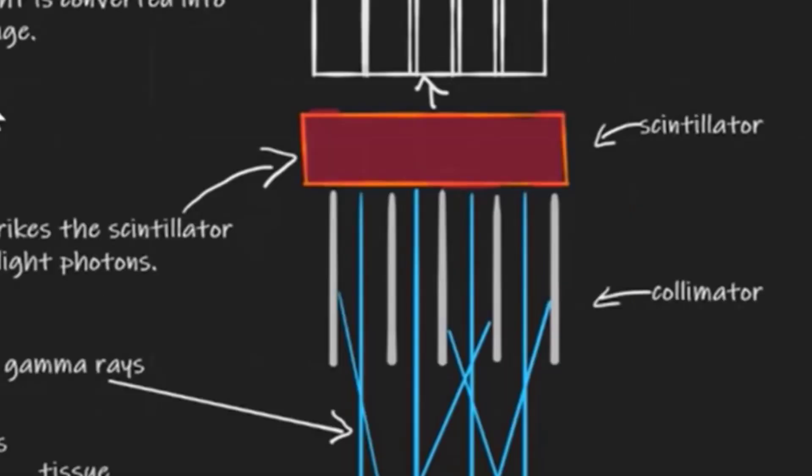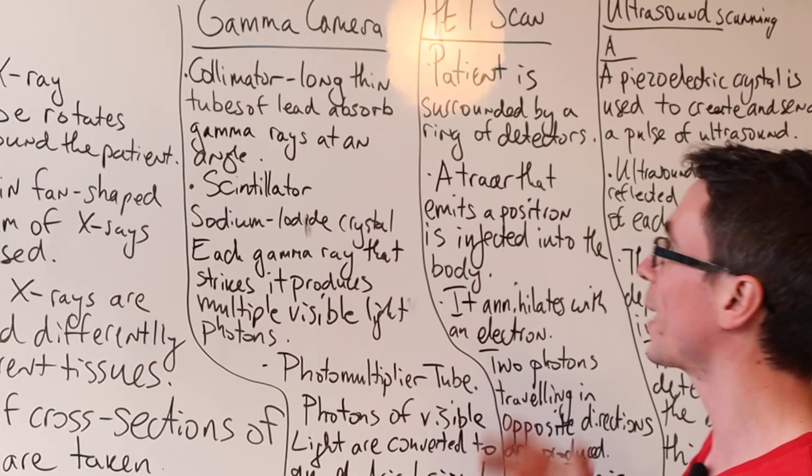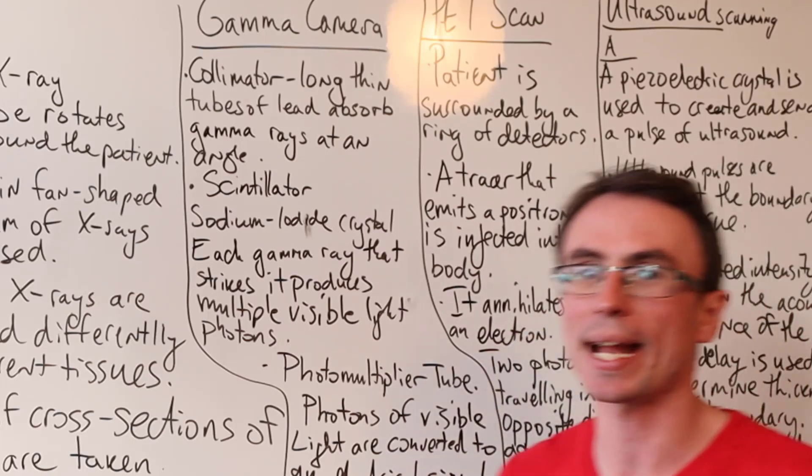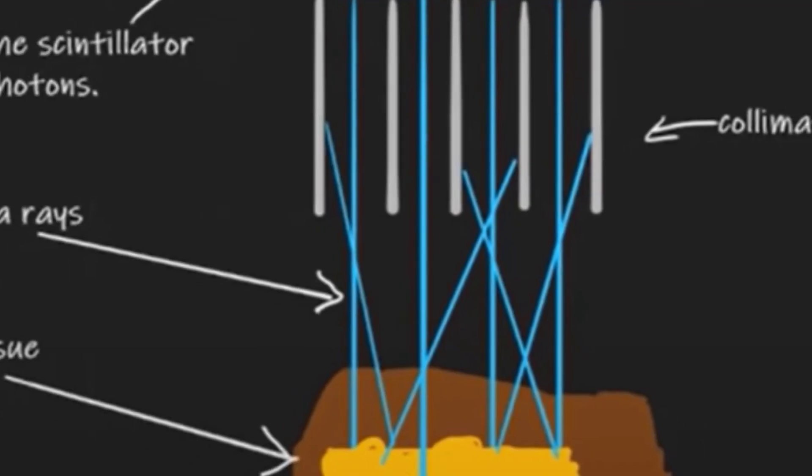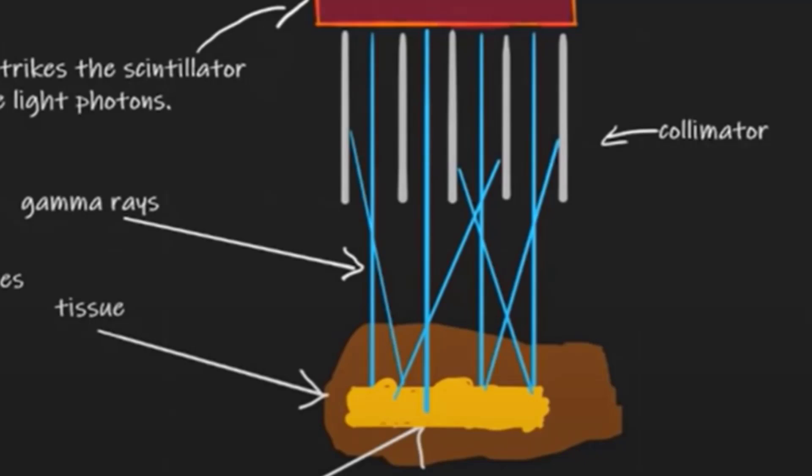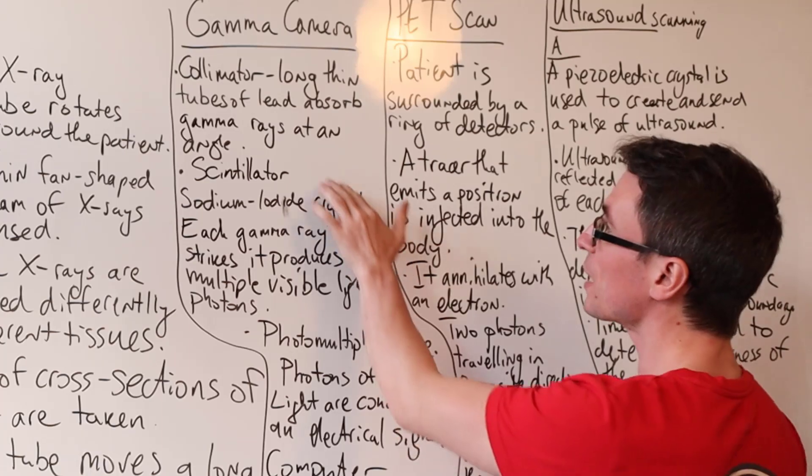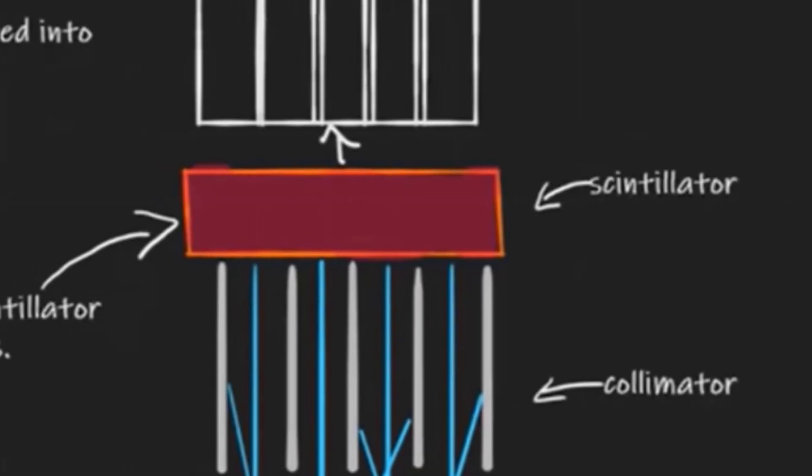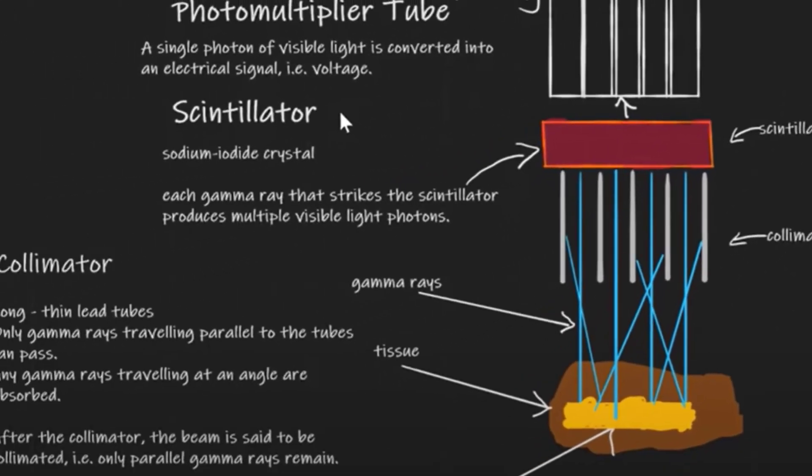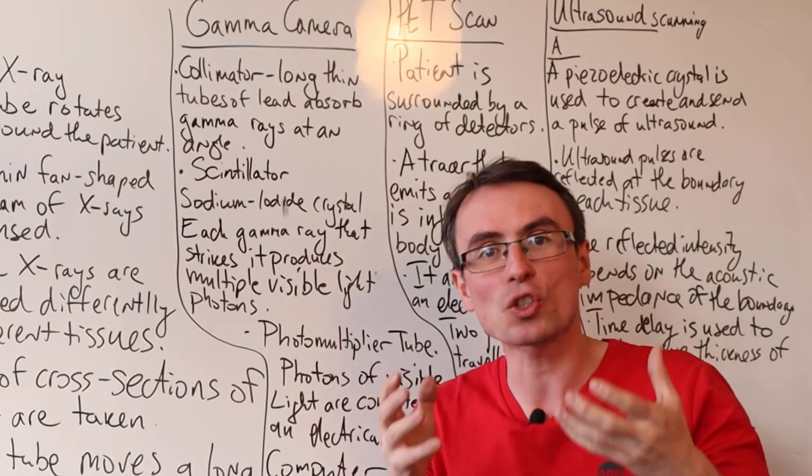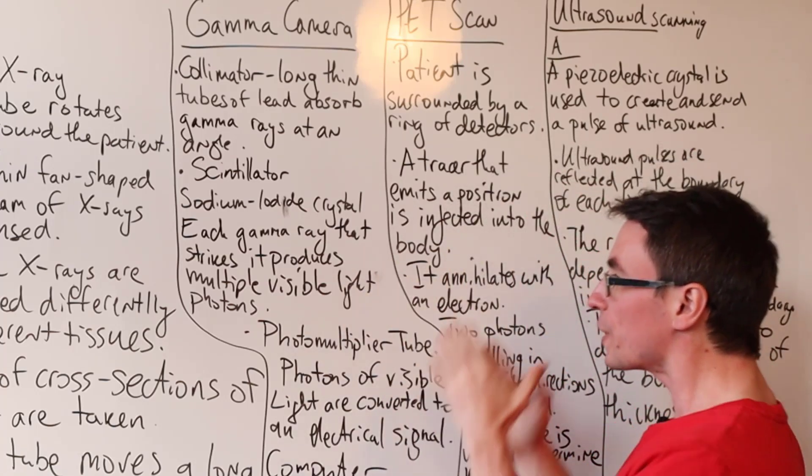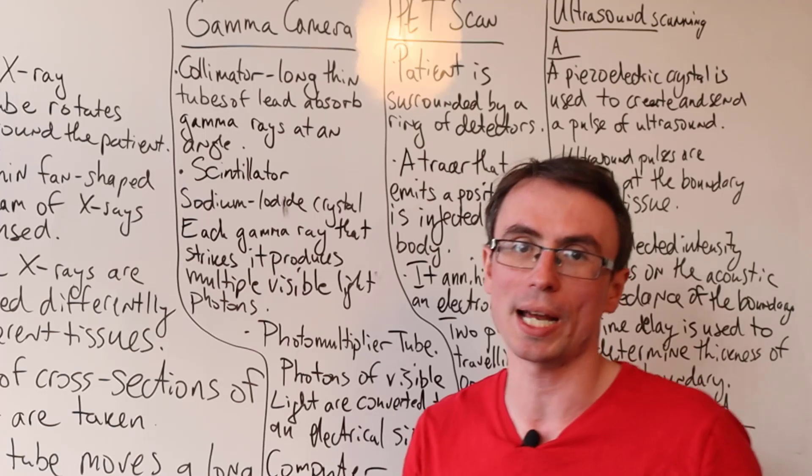Now, these are just a bunch of long, thin tubes of lead that absorb all gamma rays that strike them at an angle. In practice, after the collimator, we have a beam of parallel gamma rays. Then they strike the scintillator, which is a sodium iodide crystal. And each gamma ray that strikes it produces multiple visible light photons.